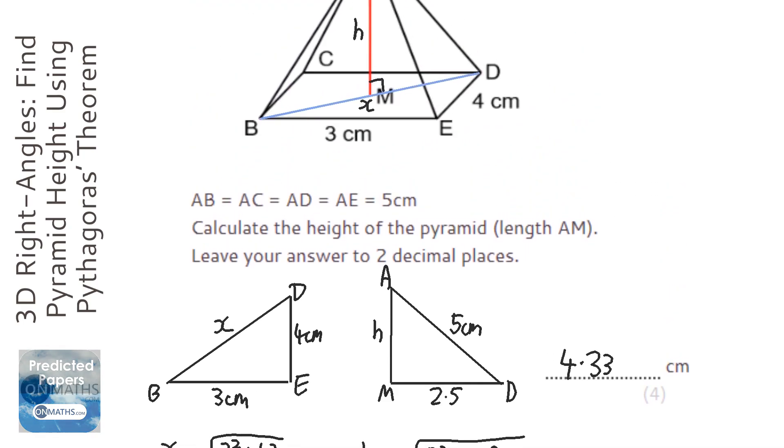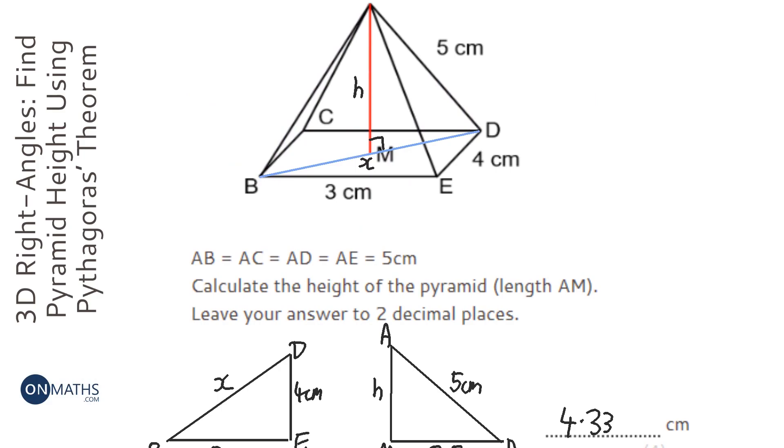And it's probably sensible to check if that makes sense. Have a look at the numbers we've got in the question. Imagine a 3 by 4 by 5 rectangular based pyramid. Does that kind of make sense? And to me, yep, that makes sense. It's less than the 5 here. And since 5 is the hypotenuse on that triangle, it needs to be less than that. So yeah, it makes sense.